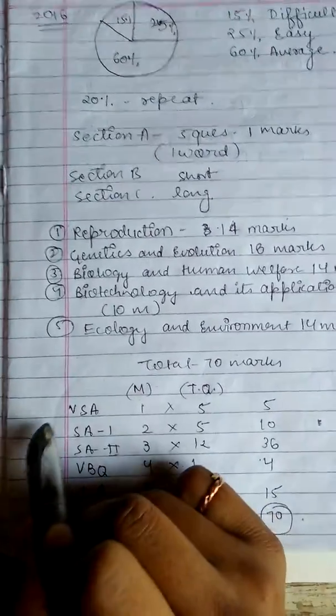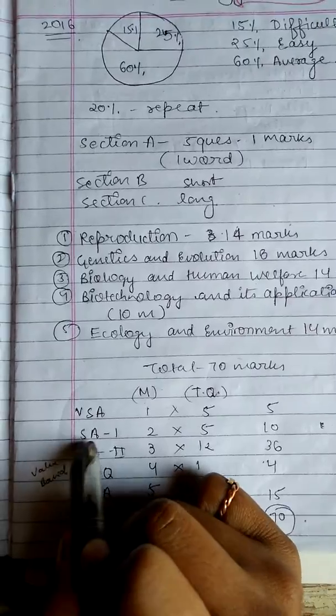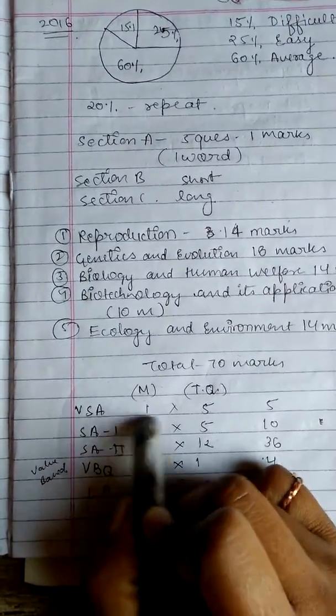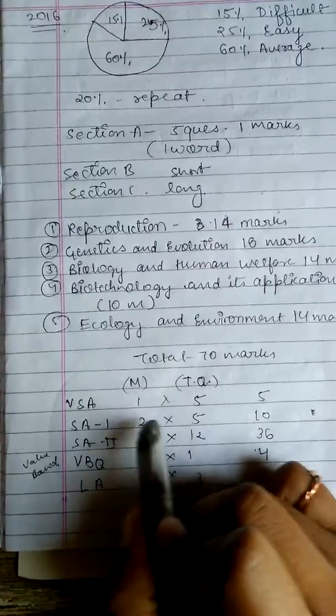Total 5 marks of very short questions. Short answers of first type is 2 marks each question, 5 questions come, 5 to 10.